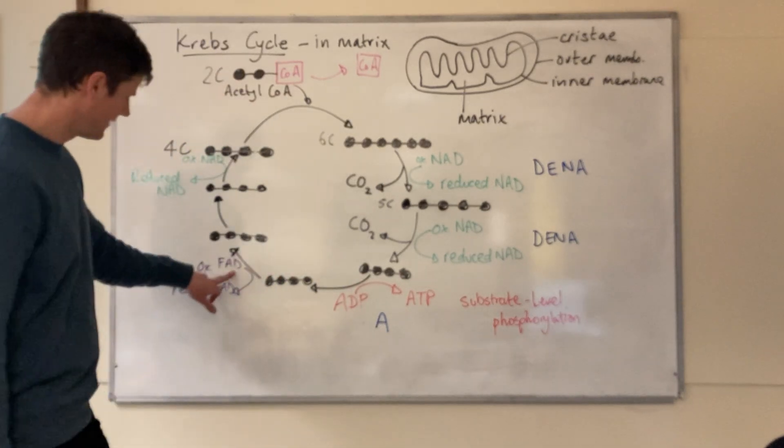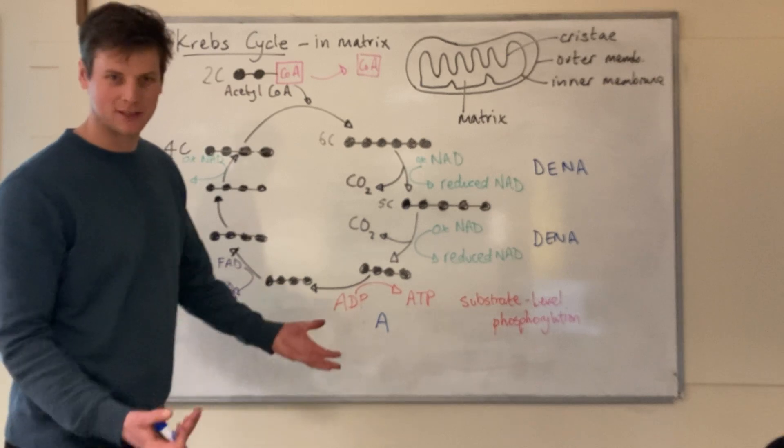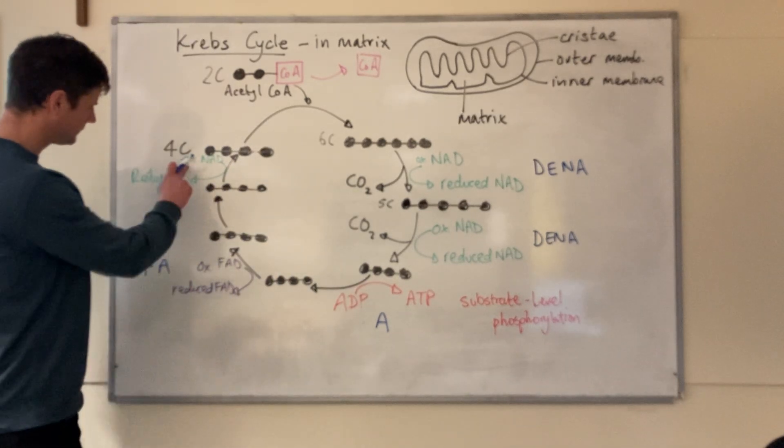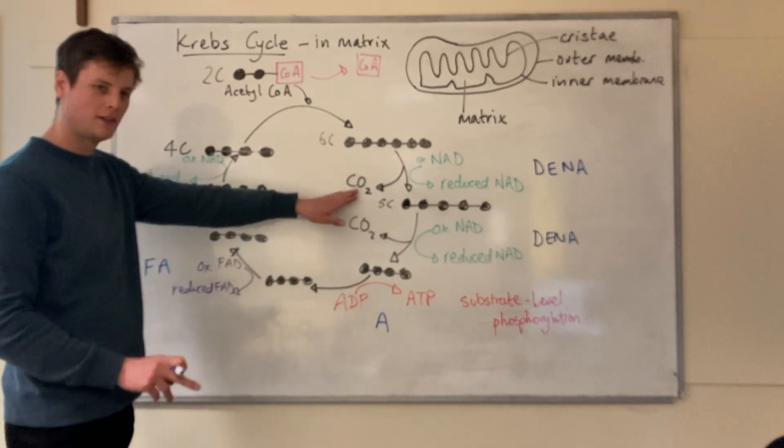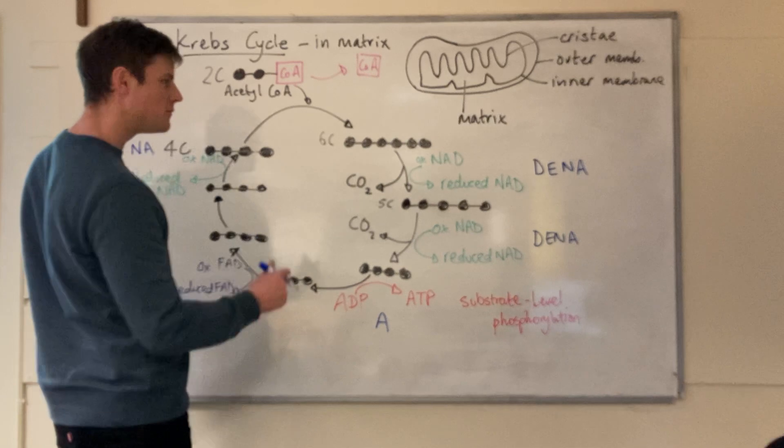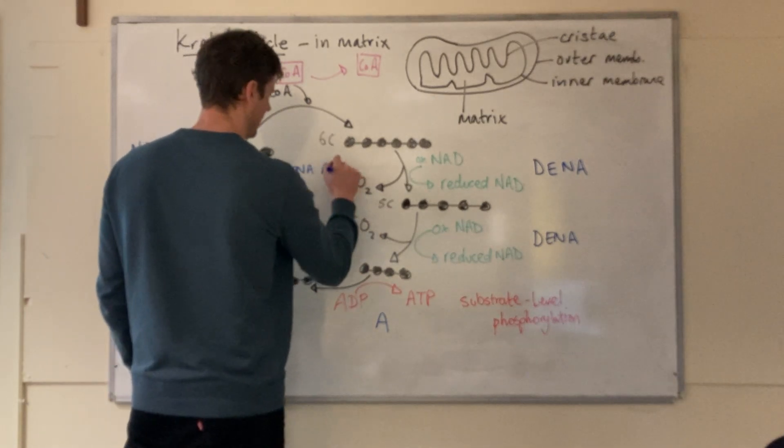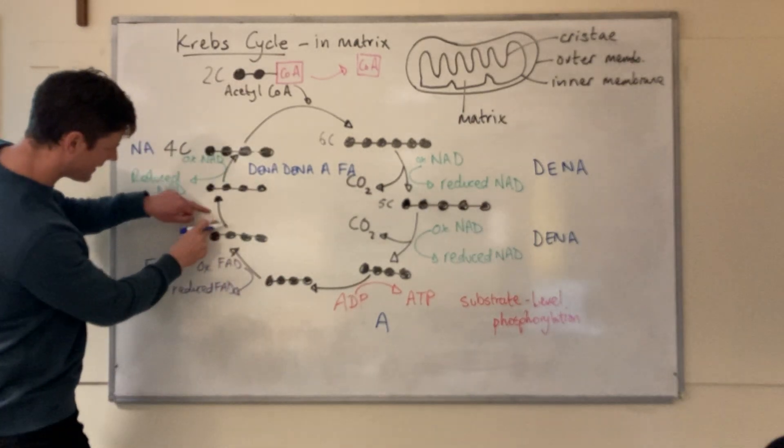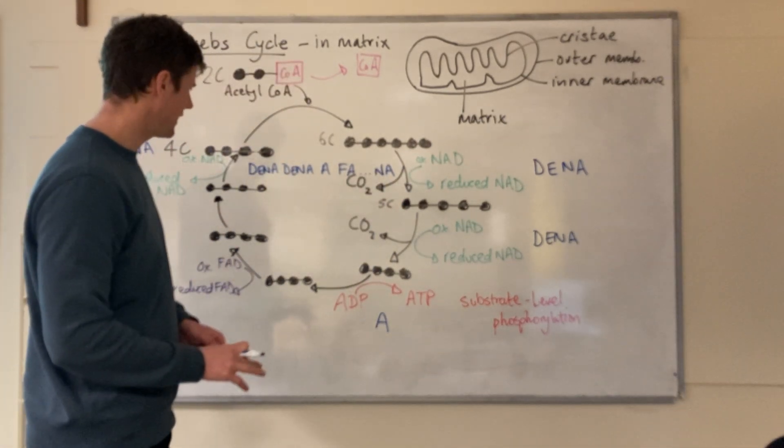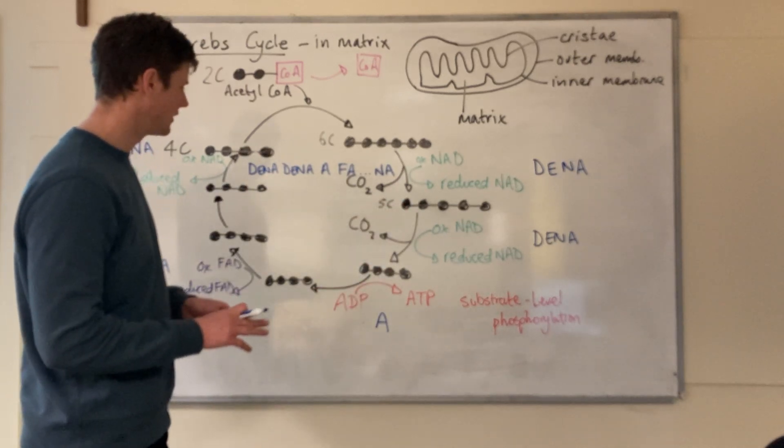Substrate level phosphorylation, I just say A. So we've got DINAR, DINAR, A. Reduction of FAD I always think of as FA. So far I've got DINAR, DINAR, A, FA. And then lastly, with the reduction of the NAD, this isn't coupled to decarboxylation, so we've got a final NAR at the end. My way for remembering the Krebs cycle is DINAR, DINAR, A, FA, NAR. And do you see this little space here where nothing happens?